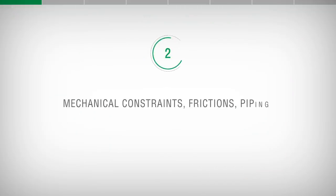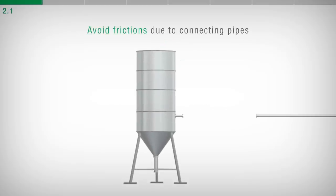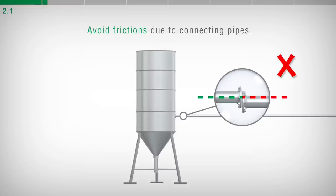Mechanical constraints, frictions, piping. The more a weight structure is free from friction, the more a weighing system is precise. When piping are present, make sure that the pipe to be anchored to the weight structure is close and aligned with the nozzle to which it will be clamped.